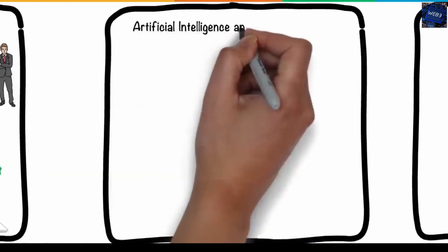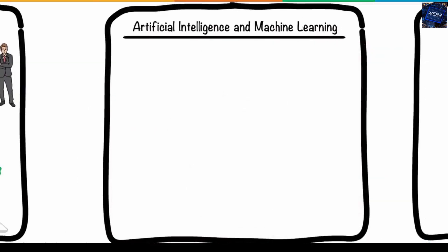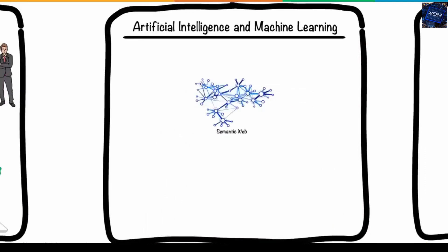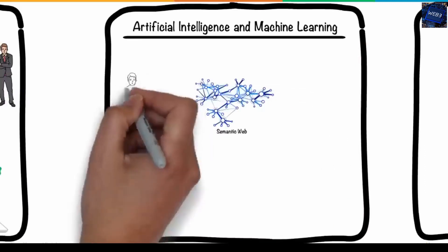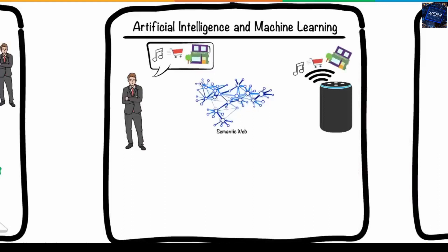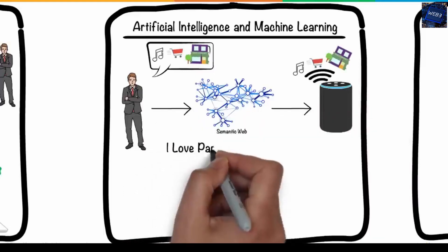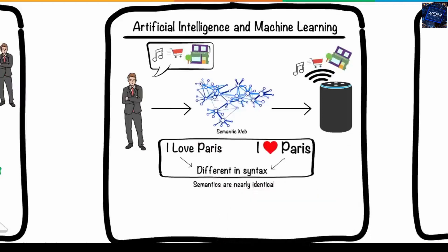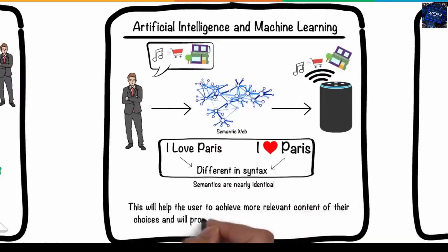Third is artificial intelligence and machine learning. In Web 3.0, through technology based on semantic web ideas and natural language processing, computers will be able to understand the information in the same way that people do. For example, I love Paris and I heart Paris may seem different in syntax, however, their semantics are nearly identical. This will help the user to achieve more relevant content of their choices, and will provide them ease with internet browsing.